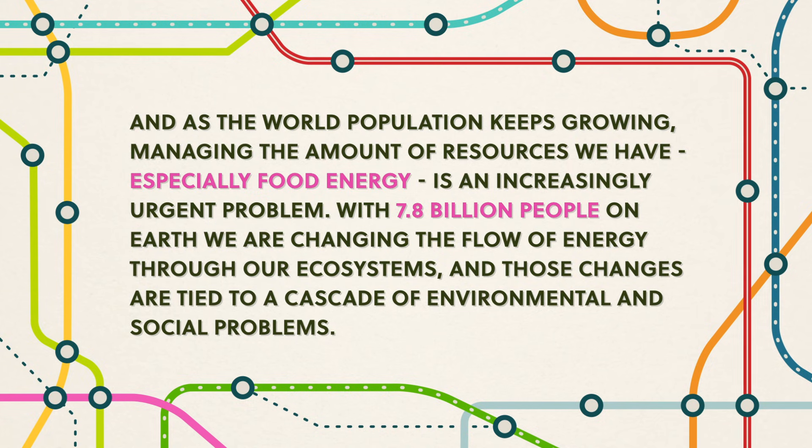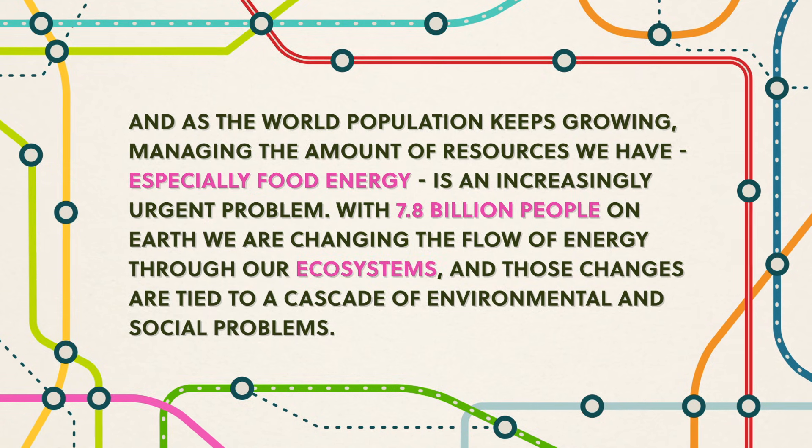With 7.8 billion people on Earth, we are changing the flow of energy through our ecosystems, and those changes are tied to a cascade of environmental and social problems. To find solutions, as geographers we examine how local choices intersect with larger scale outcomes. On the population side, we can help feed growing populations by understanding where food is produced and how it's distributed. Locally, strong distribution networks with access to affordable healthy foods are critical to making sure everyone has enough food. Regionally and globally, we can study the economic incentives that allow food to easily flow some places and not others, or systems that break down local food networks to create global ones.